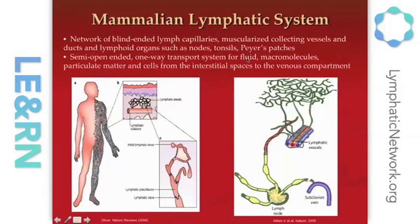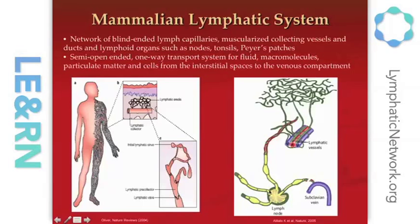In this way, lymphatics transport not only fluid, but also large molecules that can't get back into the blood directly, as well as large particulate matter and cells from the interstitial spaces — both immune cells we normally talk about, and unfortunately, metastatic cells from cancer tumors — traveling from interstitial spaces all the way through the lymphatic network en route to the venous compartment.